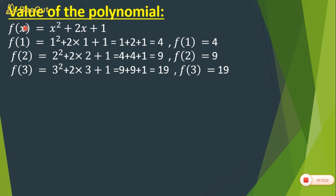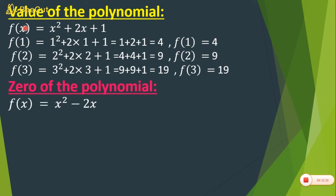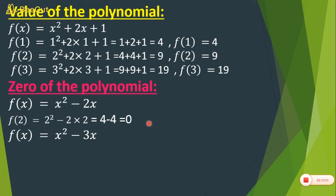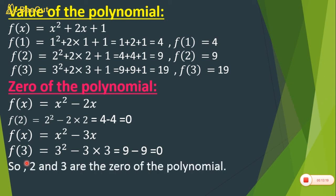The last point of this video is the zero of the polynomial. For polynomial f(x) = x squared minus 2x, any number which when substituted for x makes the entire polynomial equal to 0 is called the zero of the polynomial. For example, f(2) = 4 minus 4 = 0. Also for x squared minus 3x, putting x = 3 gives 0. So 2 and 3 are the zeros of the polynomial.